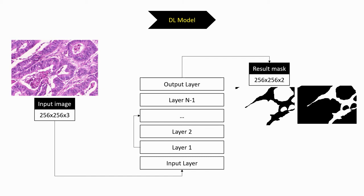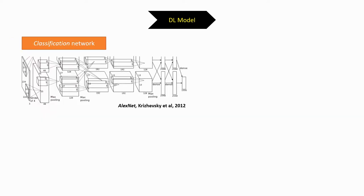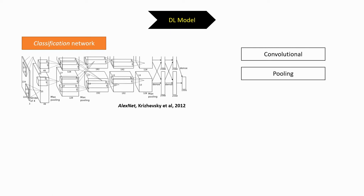Between the input and output layer, we have various successive layers which can follow each other in sequence, or split into branches or have skip connections. One of the most famous networks is AlexNet, which won the 2012 ImageNet competition. It's a classification network taking as input a 224×224×3 image and outputting a vector of size 1000, corresponding to class probabilities. Between input and output, we find three kinds of layers: convolutional layers (finding spatial features), pooling layers (downsampling), and dense layers (combining features into class probabilities).